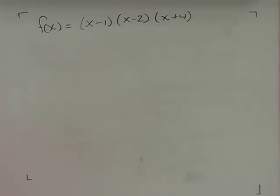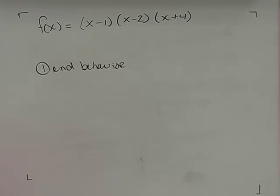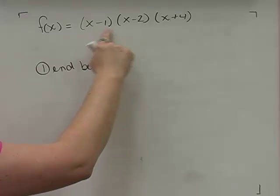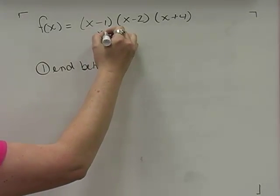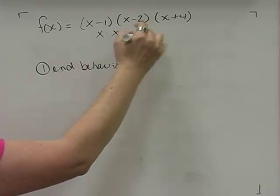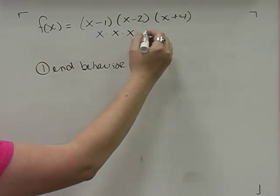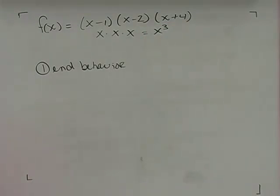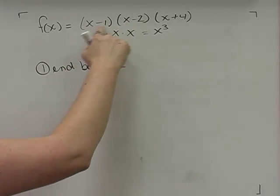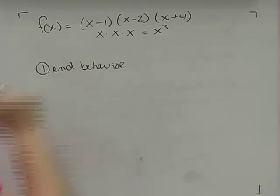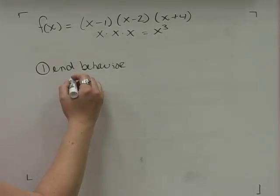The first thing we want to do is determine the end behavior — as we approach negative infinity and positive infinity, what's happening to the graph. To figure out end behavior, we need to know the degree. I don't need to fully multiply this out; each factor contributes one x term, so multiplying them gives x³. The degree of this polynomial is 3.